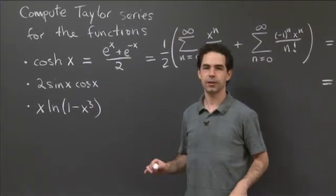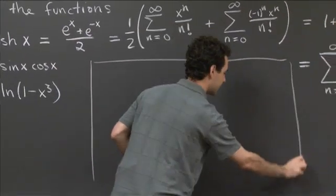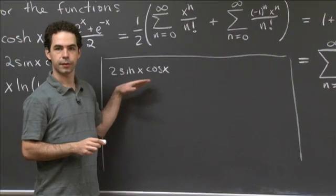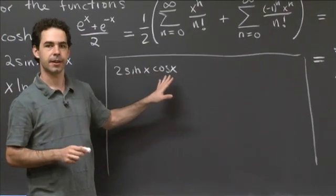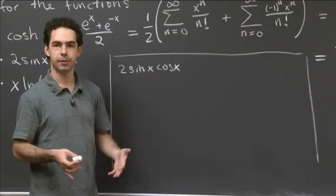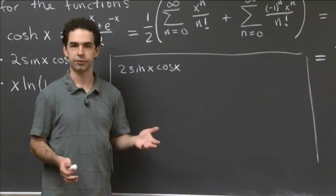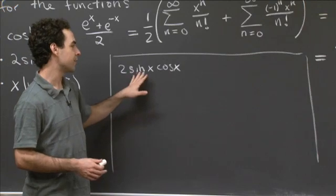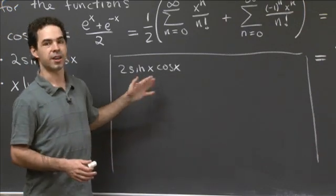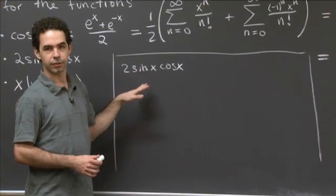Now for the second one: 2 sin(x) cos(x). There are a couple of different ways you could proceed. One is you already know the Taylor series for sin(x) and cos(x), so you could multiply those series together like polynomials to get the Taylor series for this function. Another option is taking derivatives using the product rule, though it gets more and more complicated. The other thing you could do is remember your trig identities — this expression is just sin(2x).